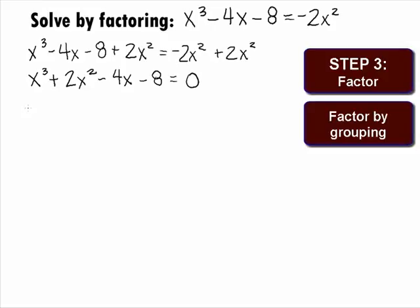We can factor out a greatest common factor of x squared out of the first two terms and get x squared times x plus 2. And factoring out a negative 4 out of the last two terms, we get minus 4 times x plus 2 equals 0.